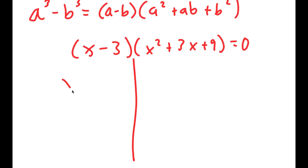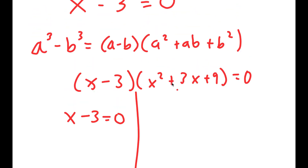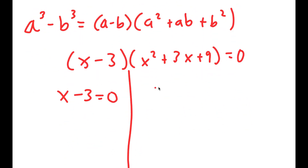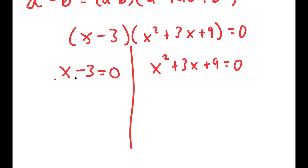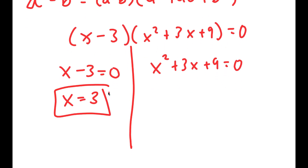So now from here, I get two equations. I get x minus 3 equals 0, and x squared plus 3x plus 9 is equal to 0. So obviously for x minus 3 equals 0, x is equal to 3. So this is one solution.